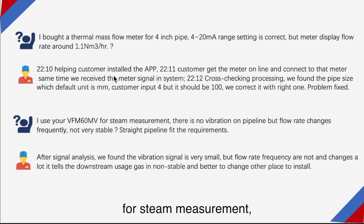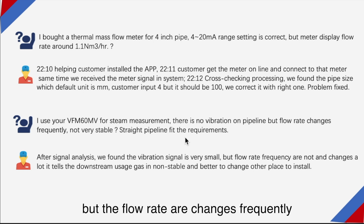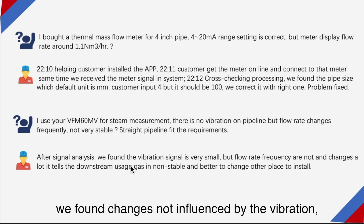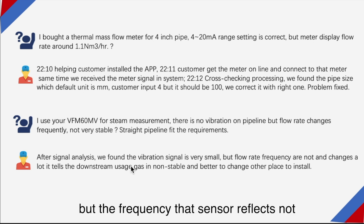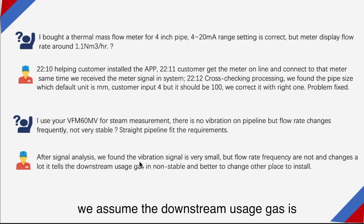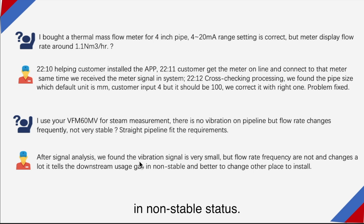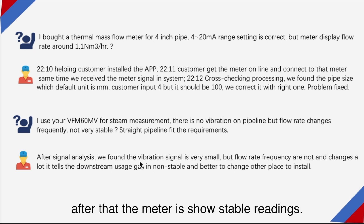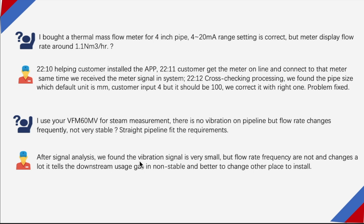We corrected it. For a second case involving a vortex meter for steam measurement, the customer provided enough straight pipeline but the flow rate was changing frequently. After remote signal analysis, we found the changes were not caused by vibration, but the frequency the sensor reflected was not very stable. From photos provided from the site, we assumed the downstream gas was in an unstable status. We recommended changing the installation location, and after that the meter showed a stable reading.